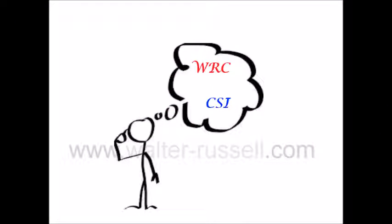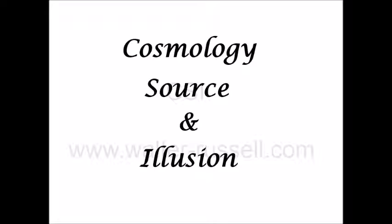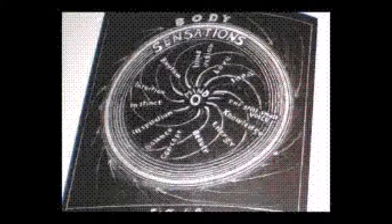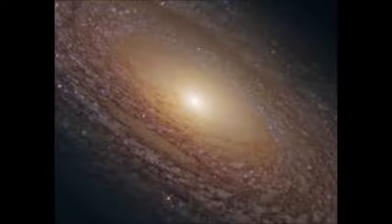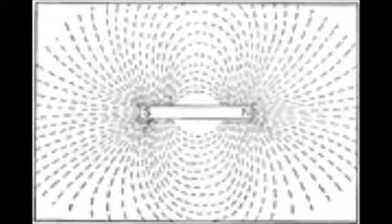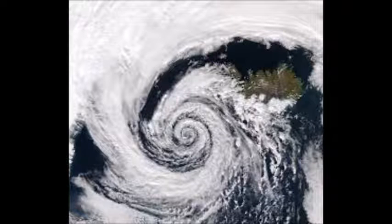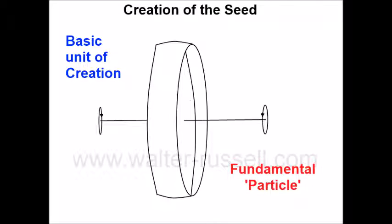Welcome YouTubers and subscribers to this series of Walter Russell CSI — that is Cosmology, Source, and Illusion. In this series of videos I hope to explain how the metaphysical pattern for motion is created, how that pattern is projected into our universe of motion to create the illusions of matter and form, how effects like electricity, magnetism, and gravity are created, and finally tie all phenomena to the one fundamental particle — simply a loop of motion which is either compressing centripetally or expanding centrifugally.